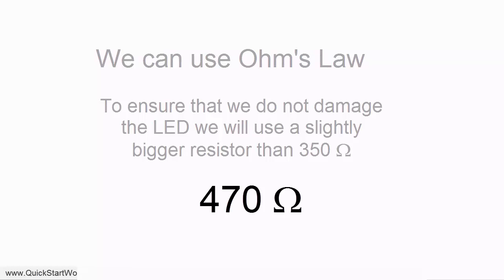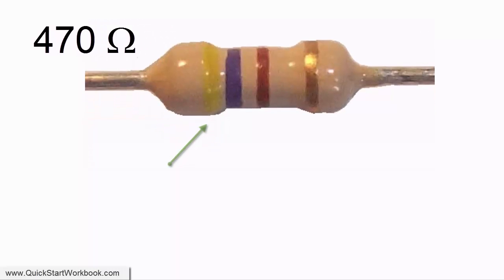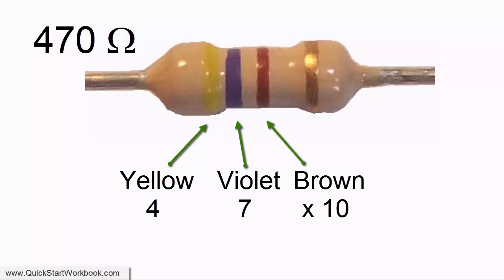The resistance value of a resistor can be worked out by looking at the bands on the resistor. For a 470 ohms resistor the bands are yellow which represents 4, violet which represents 7.